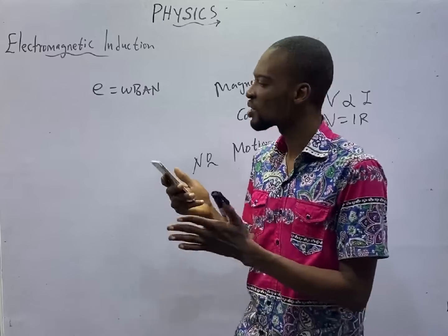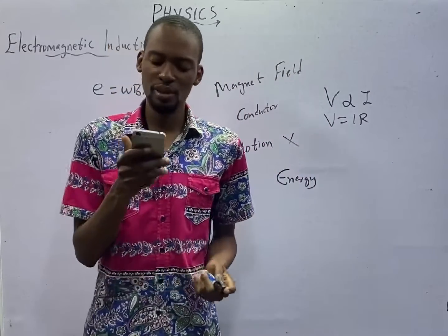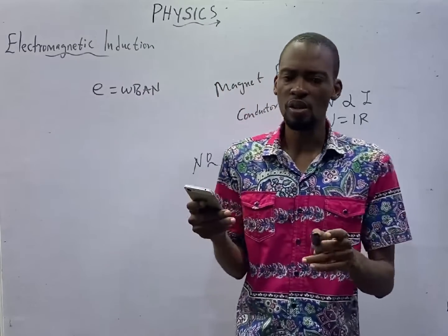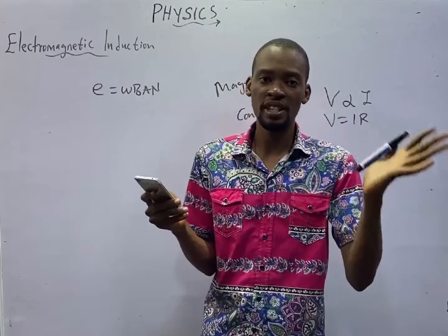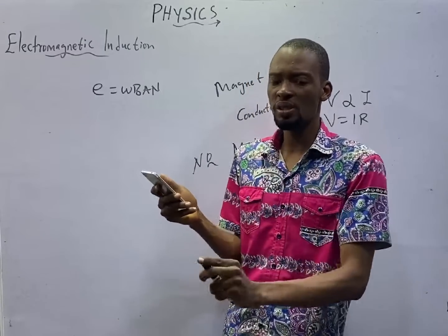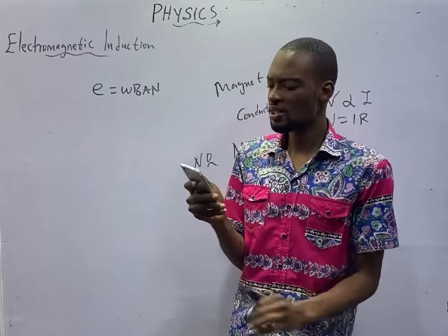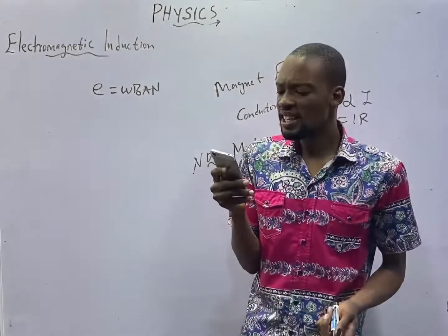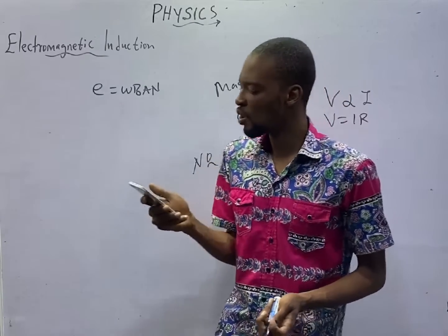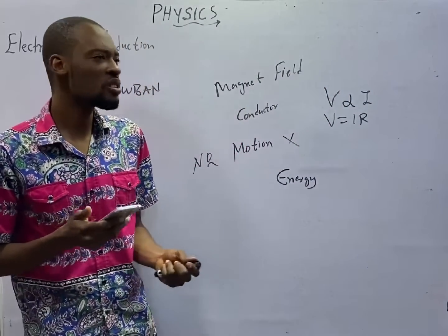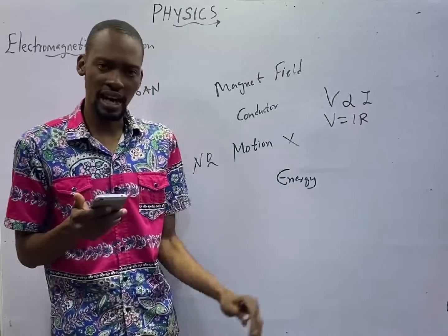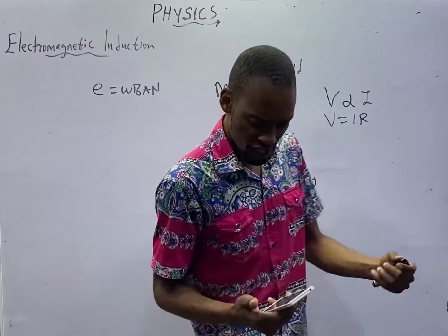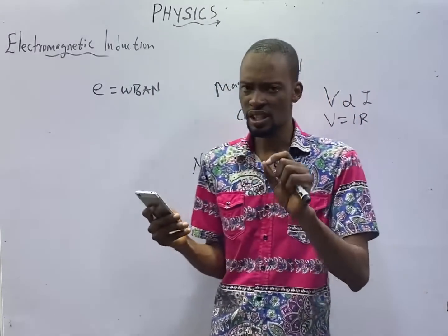To convert an AC generator to a DC generator, just remove the slip ring from the AC generator and put a split ring commutator in its place — it automatically becomes a DC generator. An alternating current can induce voltage because it has a varying magnetic field. If there is no varying magnetic field, EMF will not be induced.